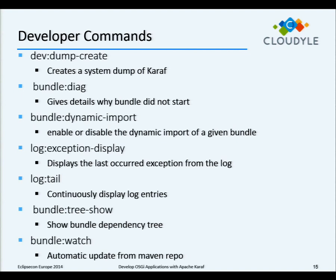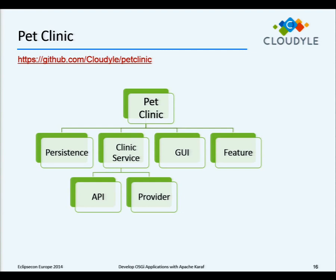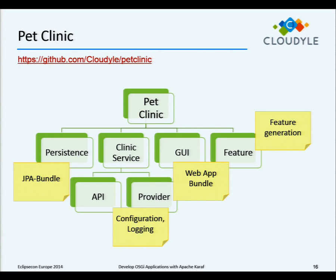We have an OSGi example application on GitHub — the Pet Clinic application based on the Spring Pet Clinic example but for OSGi, which shows some of the things in this presentation: how features are generated, how web application bundles are used, configuration, logging, JPA integration, and so on.